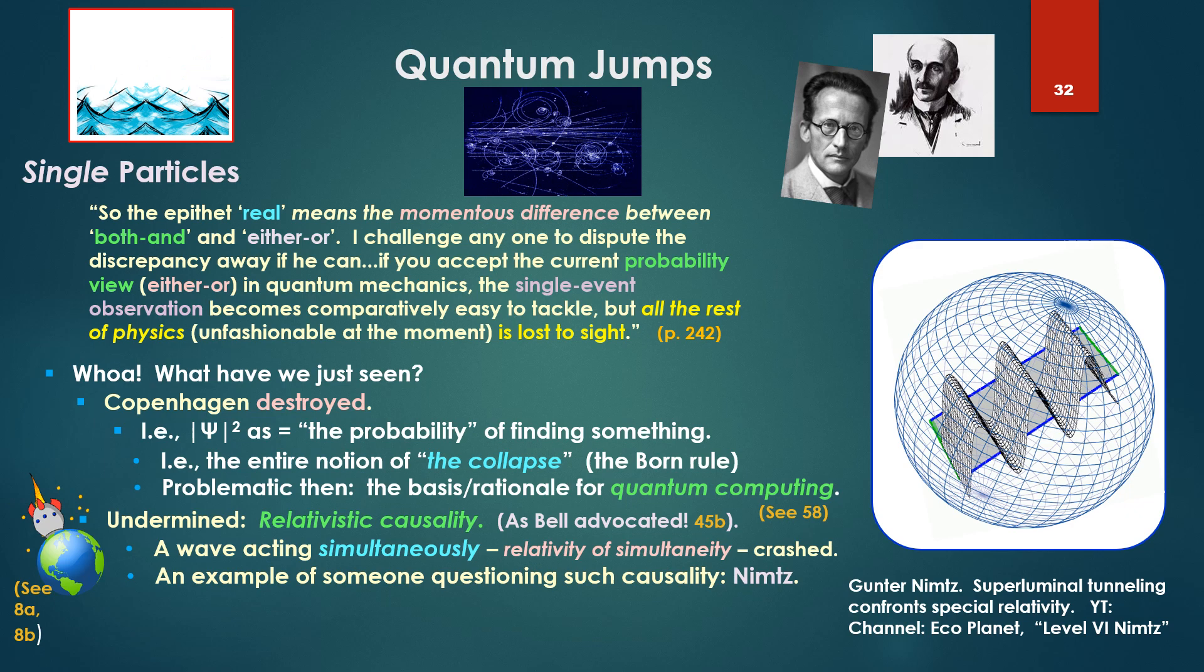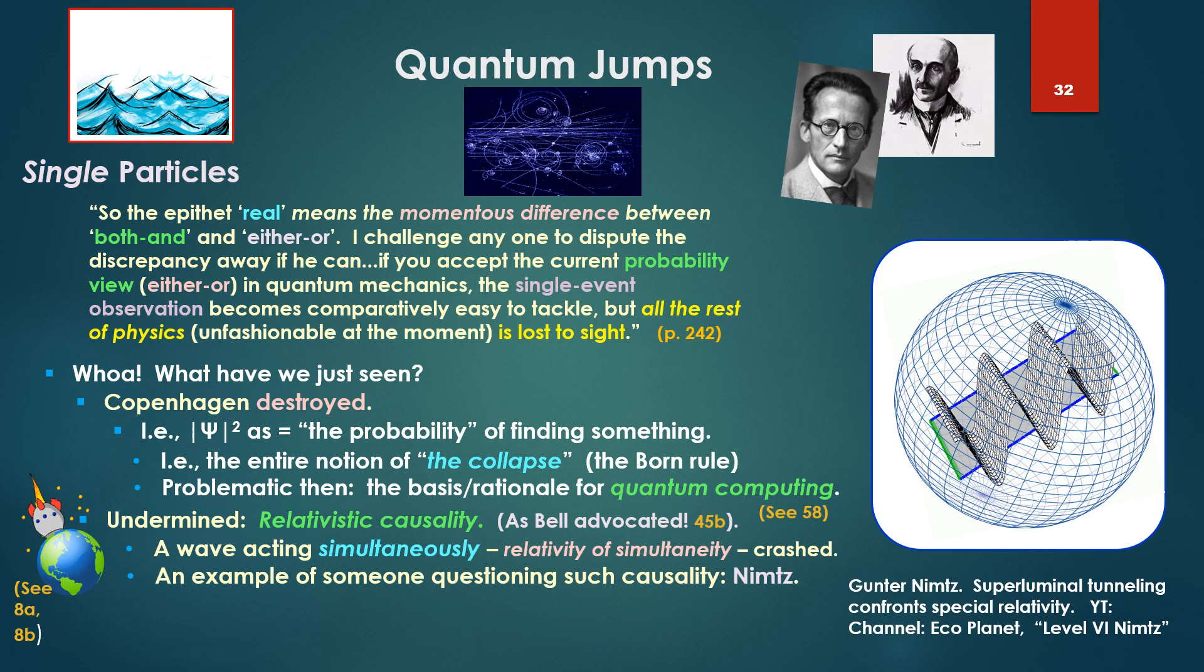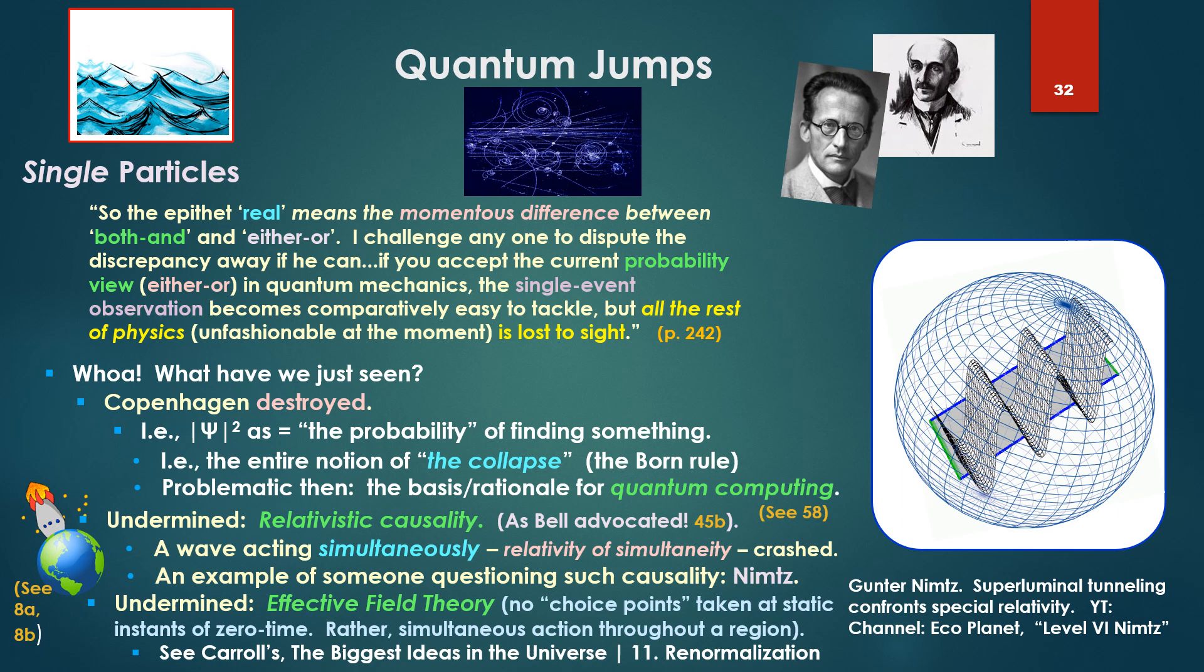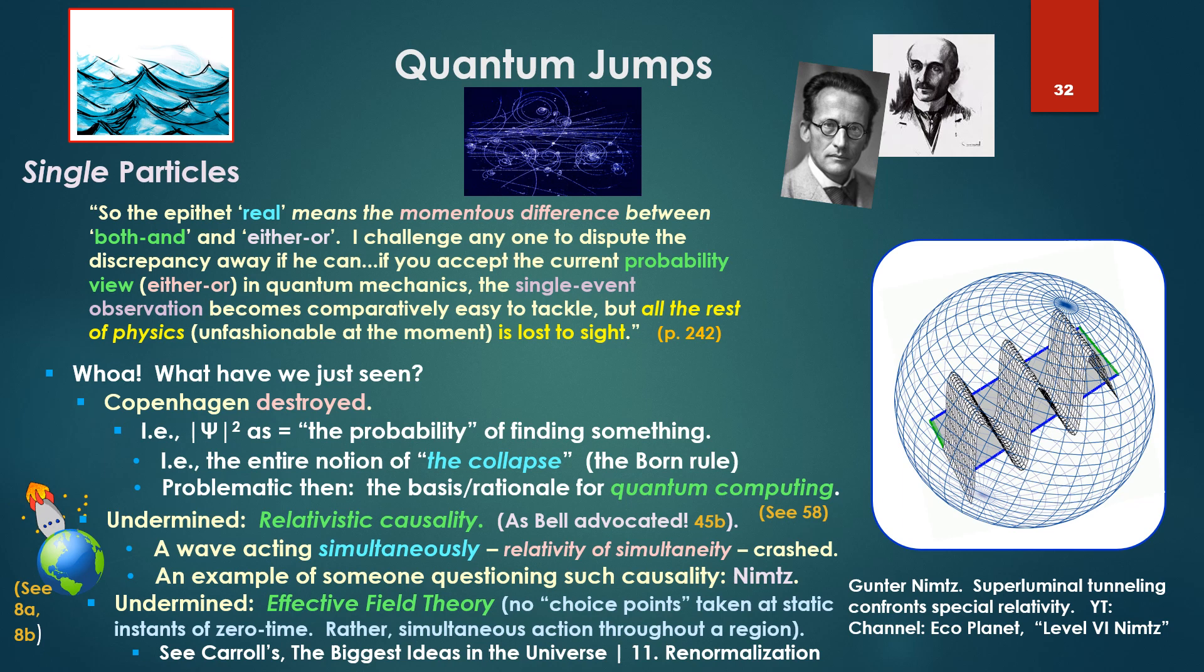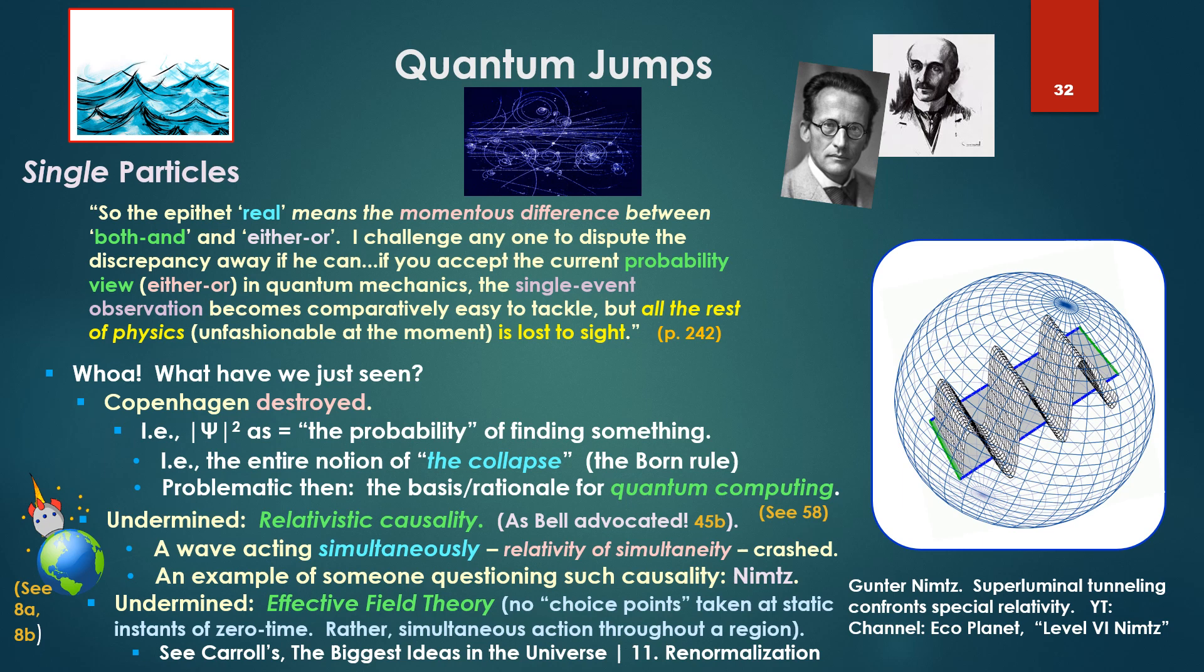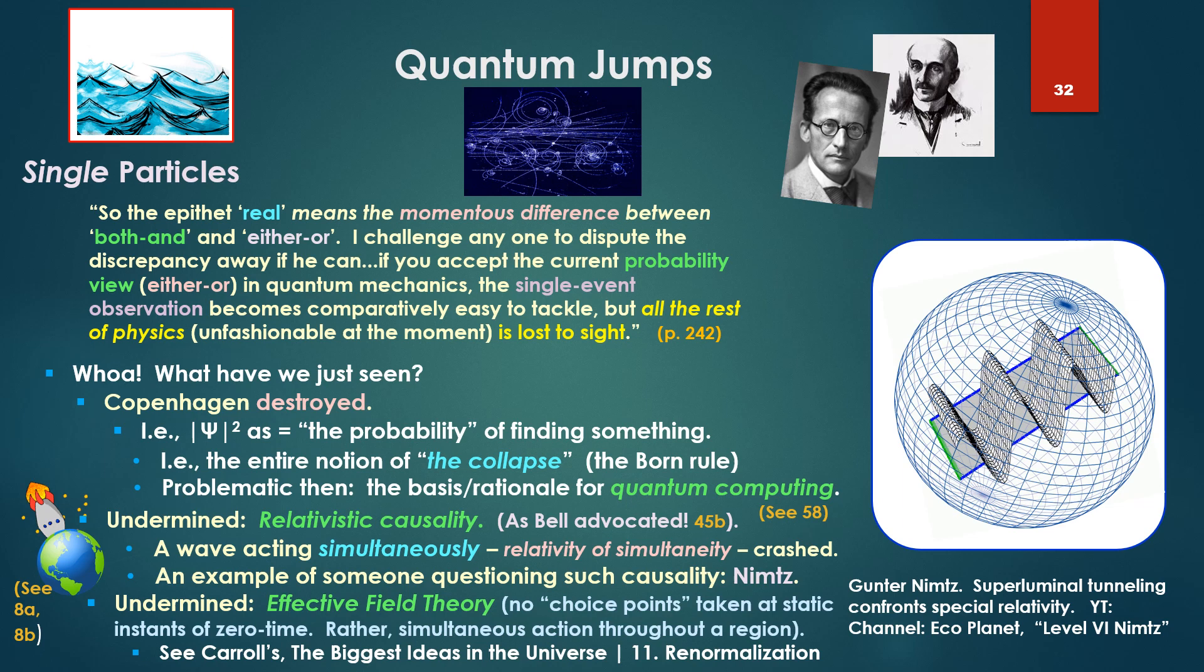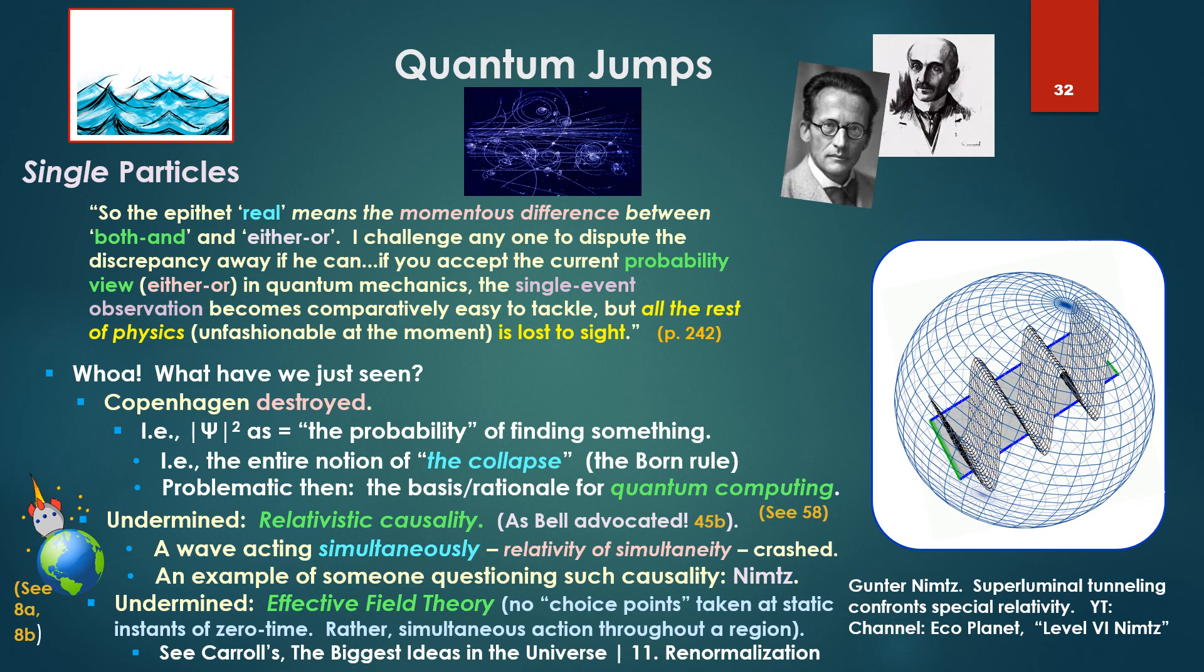An example of someone questioning the relativistic causality via experimental results, take a look at Contranénimons. We can look at the channel Ecoplanète. Let's see that conference there. Undermined, too, I think, effective field theory. There's no choice points that can be taken at static instances of zero time in Cauchy steps, sequential steps. Rather, we have simultaneous action that has to be dealt with throughout the region. One can talk or see this in play at John Carroll's discussion of renormalization against this thought.